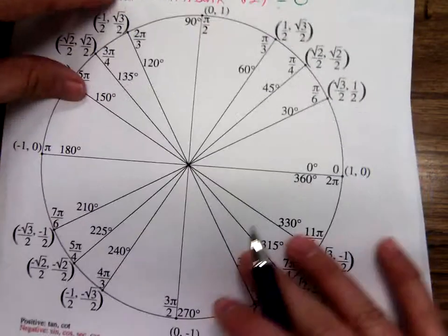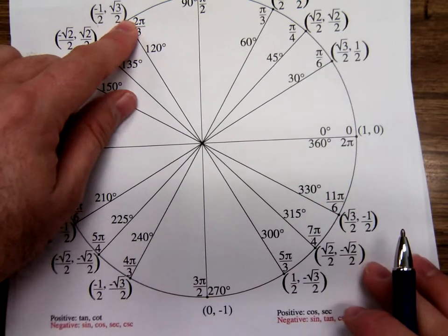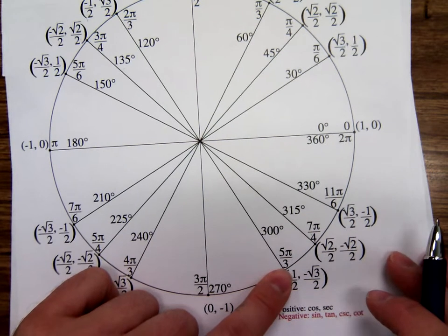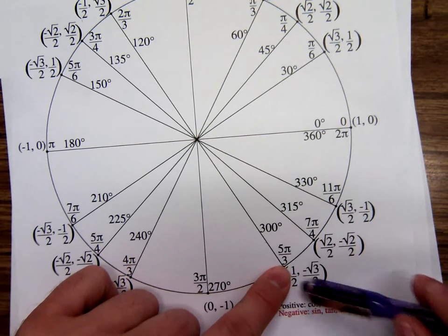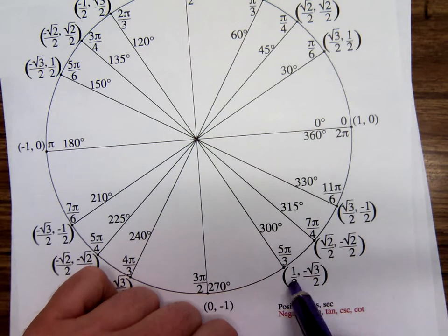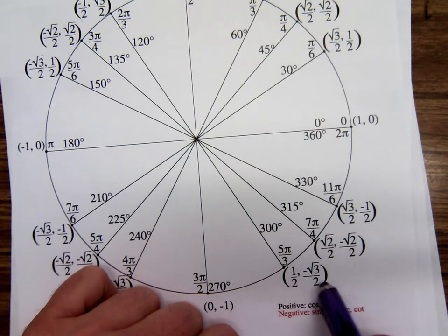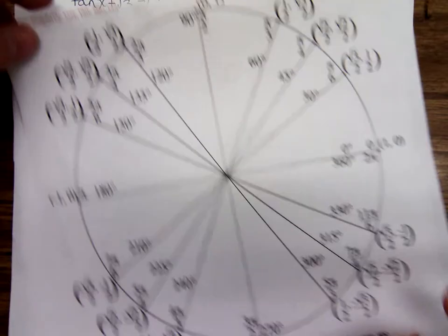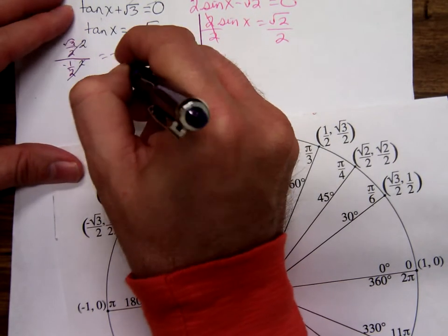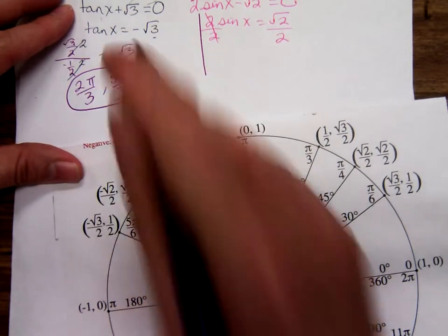And then over here is 5π over 3. Y'all see, over here, and then again, down here in the fourth quadrant at 5π over 3, sine over cosine would be negative square root of 3 over 2. It's the same ordered pairs, except the signs are reversed. So 2π over 3 and 5π over 3.